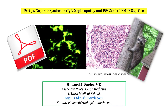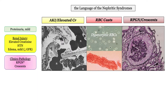As a reminder, a PDF of this presentation is available at the website. In the introductory video, review the background features of nephritic syndrome, including renal insufficiency, hematuria, and the most characteristic feature: RBC casts.